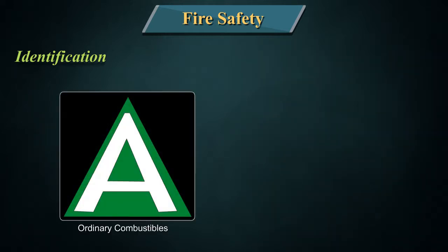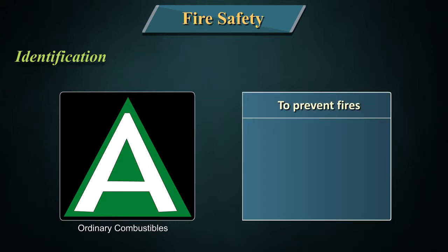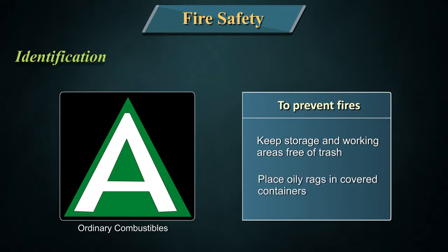Symbol A — ordinary combustibles. Extinguishers for Class A fires are identified by a triangle containing the letter A. If coloured, the triangle is green. To prevent fires: keep storage and working areas free of trash, and place oily rags in covered containers.